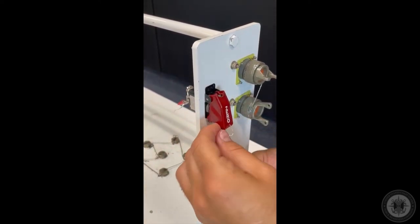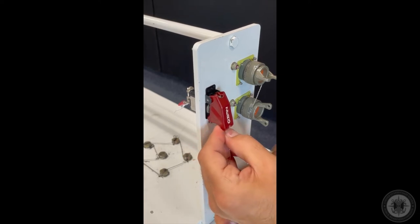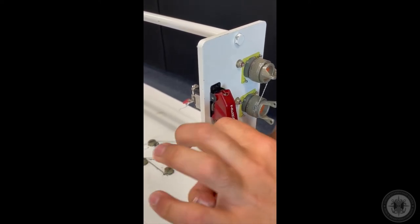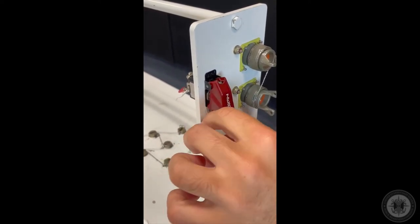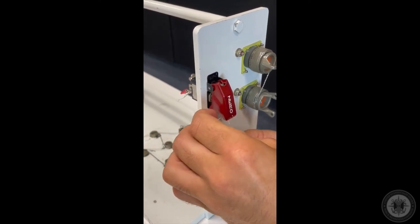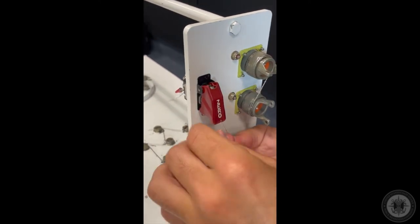Then you're going to make between five to seven, in this case six, wraps around the top contact point on the switch.